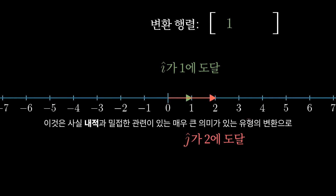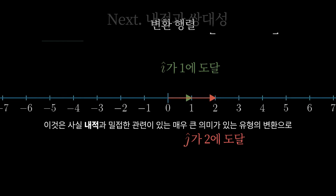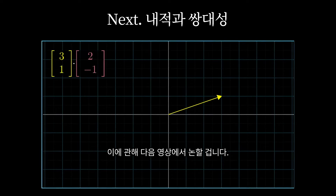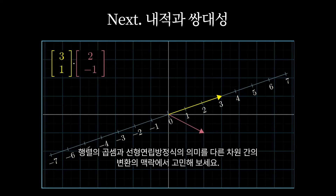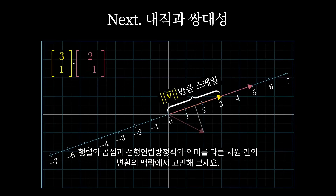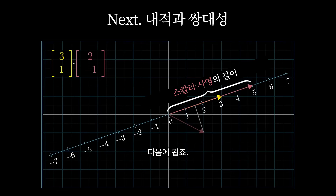This is actually a surprisingly meaningful type of transformation, with close ties to the dot product, and I'll be talking about that next video. Until then, I encourage you to play around with this idea on your own, contemplating the meanings of things like matrix multiplication and linear systems of equations in the context of transformations between different dimensions. Have fun!